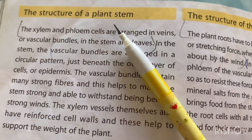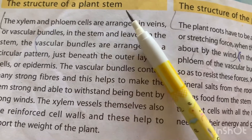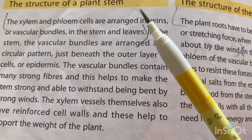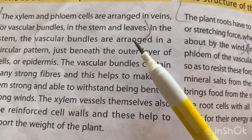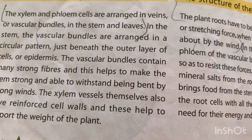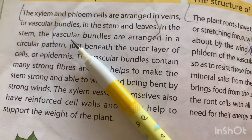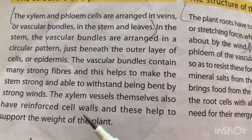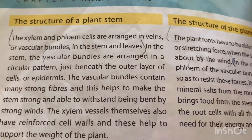Before talking about the structure of a plant stem, everyone knows about the basic structure of a living plant. Plants have roots, stems or branches, leaves, and reproductive structures — sometimes flowers, sometimes corms and spores, and so on. Most plants are vascular, which means they have a system of tubules inside them that carry nutrients around the plant.